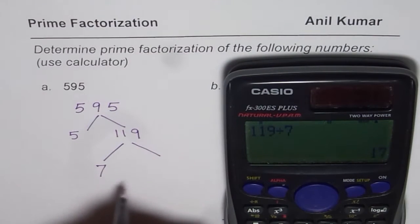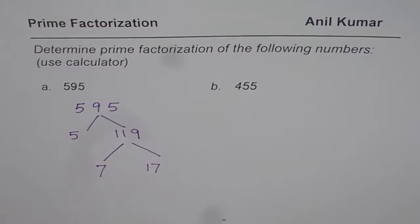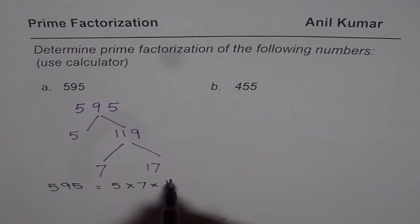119 can be written as 7 times 17. So now we have the prime factorization of 595. 595 can be written as the product of these prime numbers: 5 times 7 times 17.